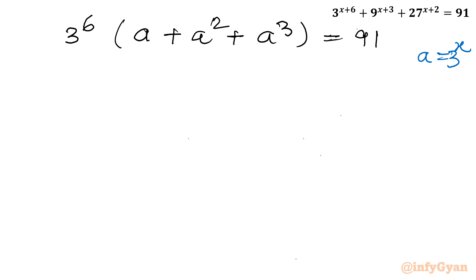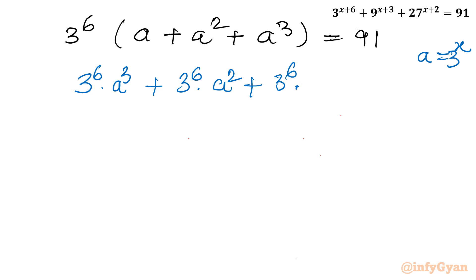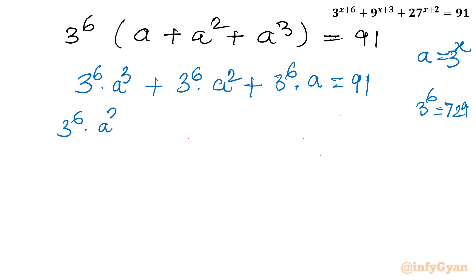Let us expand: 3^6 · a^3 + 3^6 · a^2 + 3^6 · a = 91. Now, 3^6 = 9 × 9 × 9 = 729. Moving all terms to one side: 3^6 · a^3 + 3^6 · a^2 + 3^6 · a − 91 = 0.